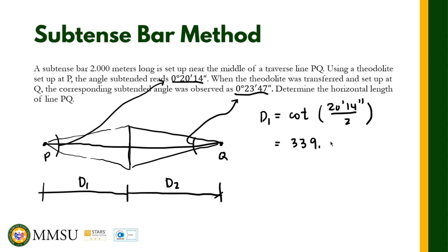This is the distance from point P to the subtense bar. For d2, this is the distance from point Q to the subtense bar. We have cotangent of the angle 23 minutes 47 seconds divided by 2, and this one is equal to 289.09 meters.